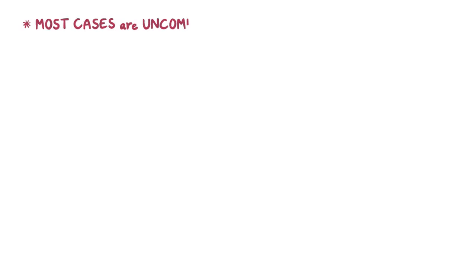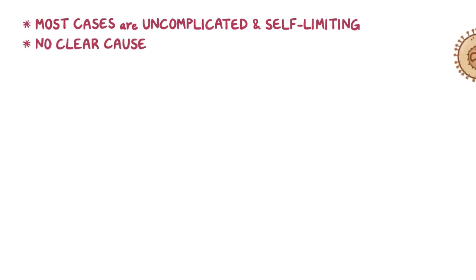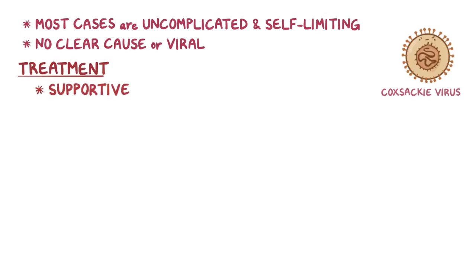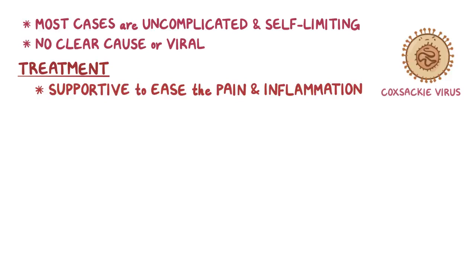Most cases of acute pericarditis are uncomplicated and self-limited, and most of the time there's no clear cause identified, or it's thought to be viral pericarditis, like from Coxsackie virus, and supportive treatment is given to ease the pain and inflammation. Non-steroidal anti-inflammatory drugs, or NSAIDs, like ibuprofen or aspirin, usually work for pain relief.